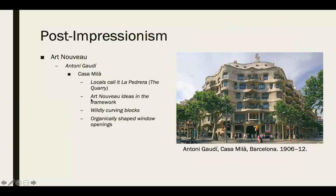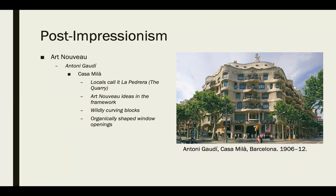Art Nouveau carries over to actual building styles as well. Antoni Gaudí created Casa Milà — locals call it 'La Pedrera,' or the quarry. Art Nouveau ideas are very apparent in the actual framework, with wildly curving blocks and organically shaped window openings, which are very difficult to achieve architecturally. This is a great example of Art Nouveau in actual architectural planning. That wraps up this lesson, and we'll jump back in for our last lesson.